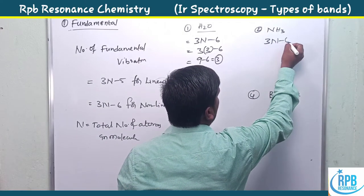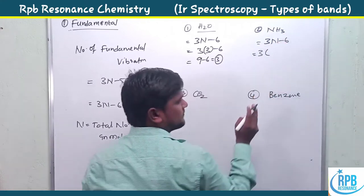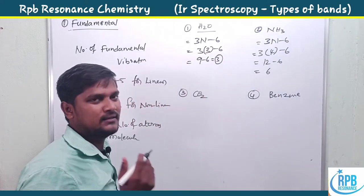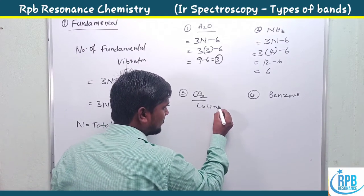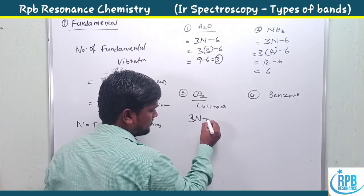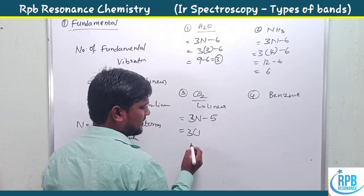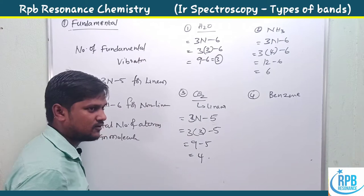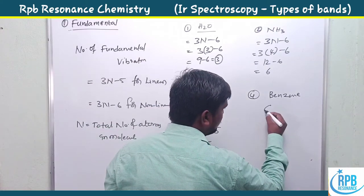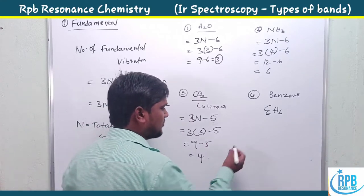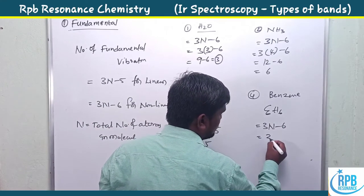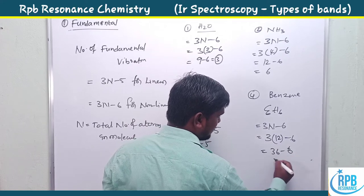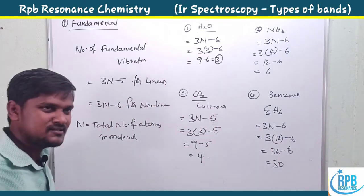For CO2: it is a linear molecule, so we use 3N − 5. Number of atoms N = 3. So 3×3 − 5 = 9 − 5 = 4 fundamental vibrations. For benzene (C6H6): it is a non-linear molecule. Total atoms N = 12. So 3×12 − 6 = 36 − 6 = 30 fundamental vibrations are observed. This is a very simple formula for predicting the number of fundamental vibrations in IR.